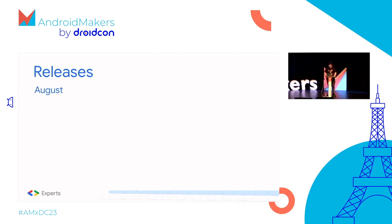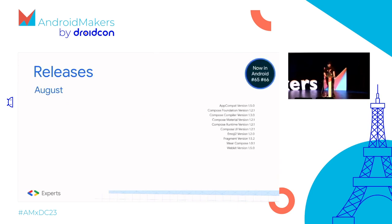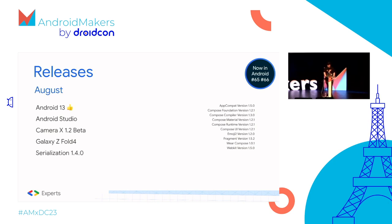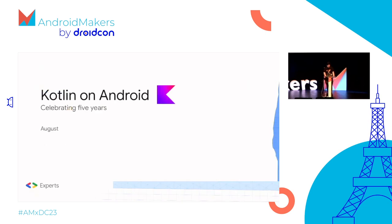August saw a minor update to Jetpack Compose, and Google pushed the Android 13 source code to AOSP making it the final public release. We also had Android Studio Electric Eel Canary 10, Dolphin RC1, and Chipmunk Patch 2. Some Samsung foldable devices were released at the Galaxy event, and serialization 1.4 requiring Kotlin 1.7, OKIO integration, and Zipline from the folks at Cash App.